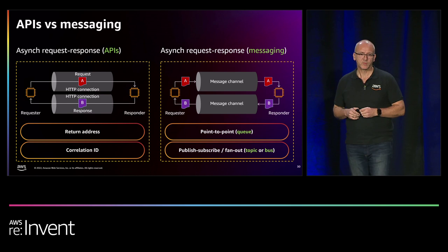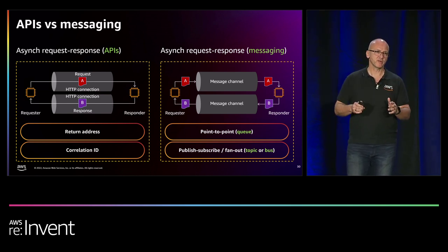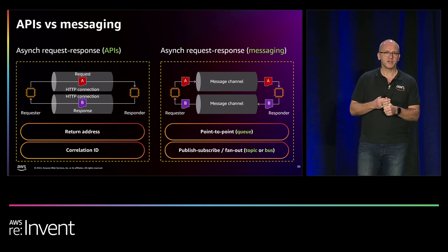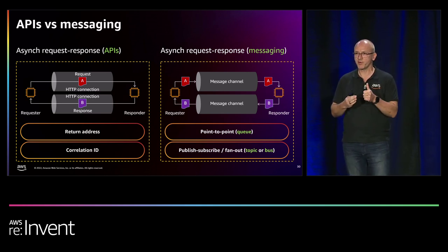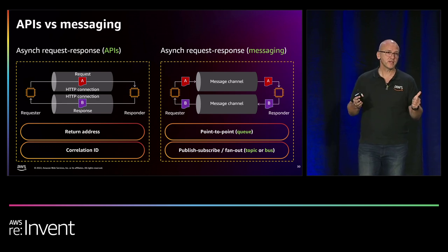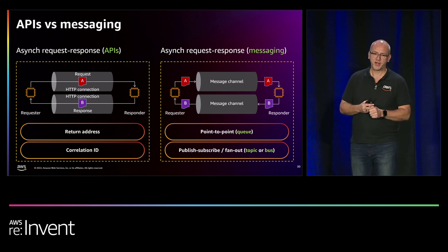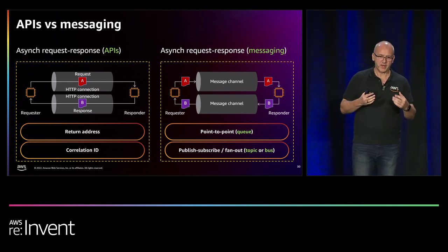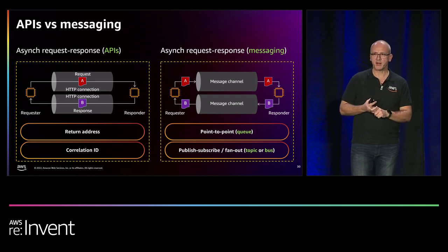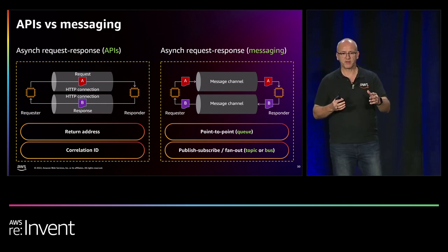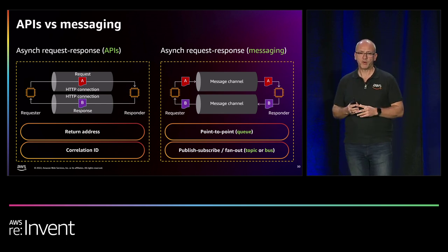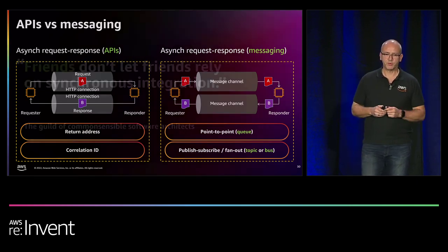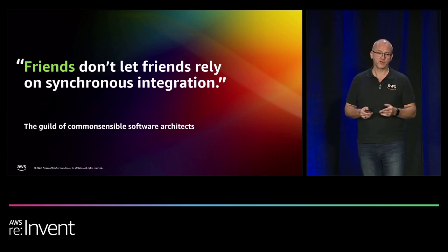With messaging, you offload the location dependency to the messaging system — but that's a different game. You can have a dedicated team ensuring the messaging system is available, or better yet use a cloud-native serverless messaging system for high availability and scalability. You can also configure business logic rather than technical details for addressing systems, using typed message channels that have meaning. This all brings me to the quote: friends don't let friends rely on synchronous integration.